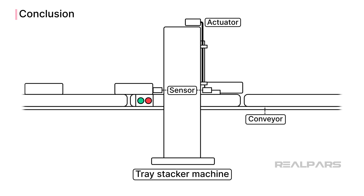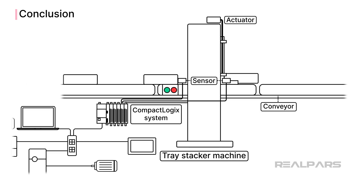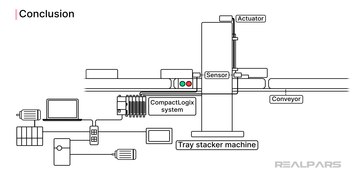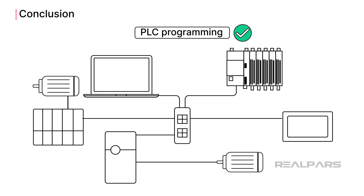In this video, we saw a typical application of a CompactLogix PLC system and the components that make up a CompactLogix PLC system. As you can see, there is much more to controlling a machine than just the logic in the PLC. Many devices have to work together in harmony, including sensors and actuators, variable frequency drives, servo drives, and HMIs. Although controls engineers need to understand how to configure and program these other devices, the most important skill that you can have as a controls engineer is PLC programming, since PLCs are at the heart of every automation project.